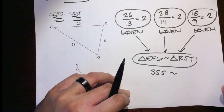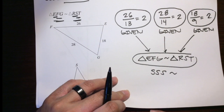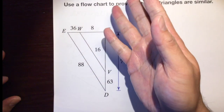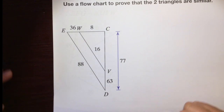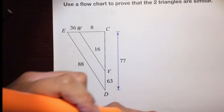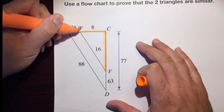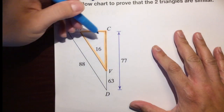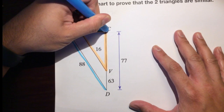In a later video, we'll get two other reasons why two triangles could be similar. But for this one, we'll focus on side, side, side similarity. Now, same question: use a flowchart to prove that the two triangles are similar. Do you see two triangles? I'm going to highlight the small triangle right here and the big blue triangle.